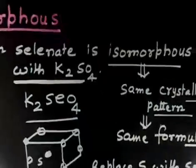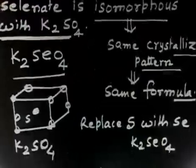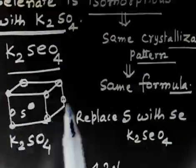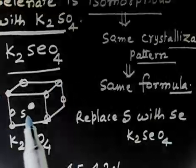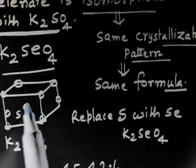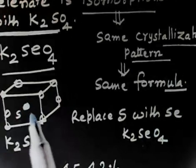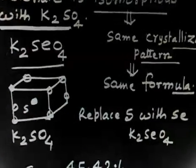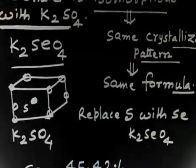In potassium sulphate, the sulphur atom occupies a certain position with the potassium atoms around it. In K2SeO4, only the sulphur atom gets replaced by the selenium atom. So everything remains the same — only in place of sulphur, we have selenium.